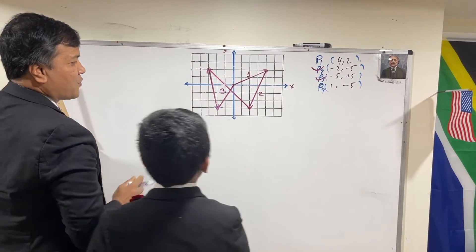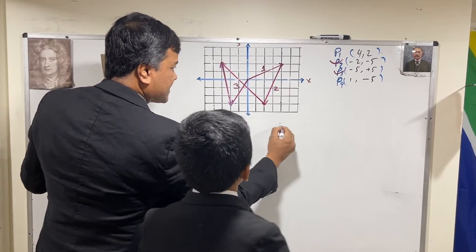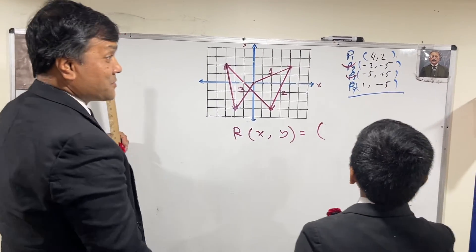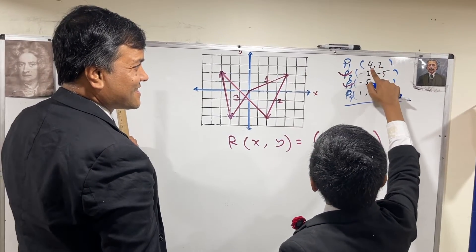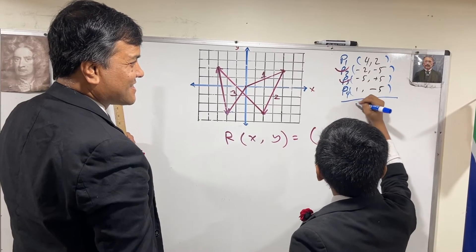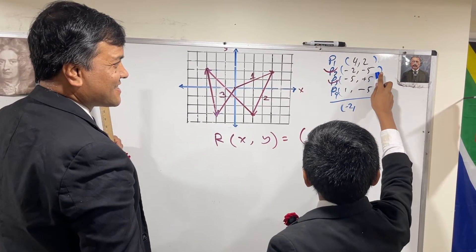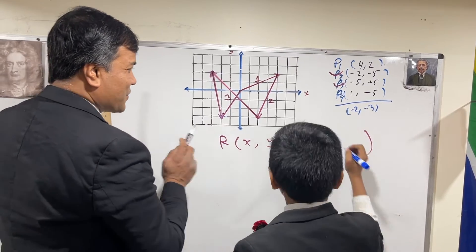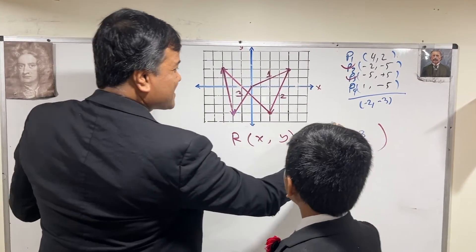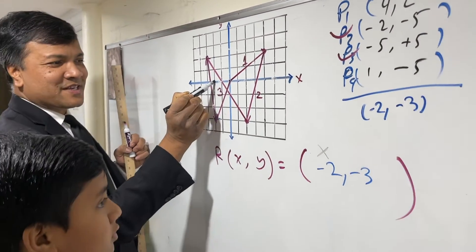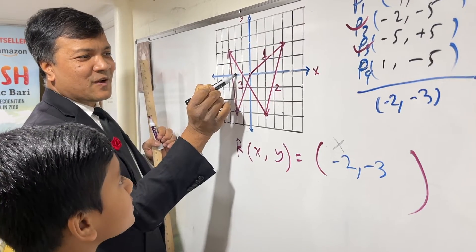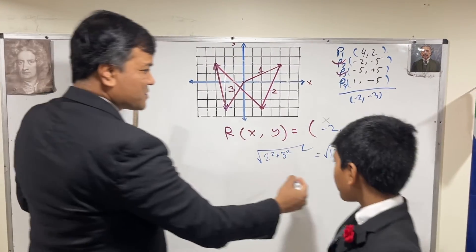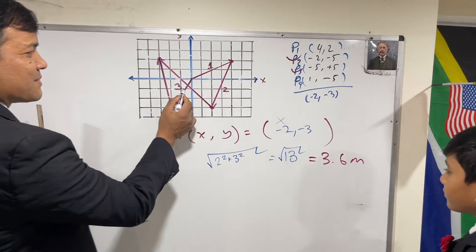So what would be the resultant X and Y? To find the resultant X and Y, we add the components. We have 4 plus 1 is 5, minus 5 is 0, minus 2 — so X is minus 2. Then we have 2 minus 5 is minus 3, plus 5 is plus 2, minus 5 is minus 3. So let's verify: minus 2 in X, and minus 3 in Y. Using the Pythagorean theorem, the square root of 13 is 3.6 meters — the resultant magnitude is 3.6 meters.